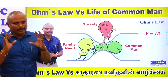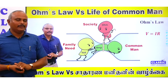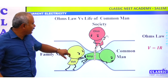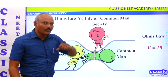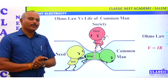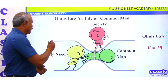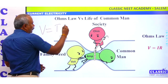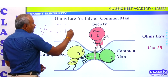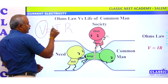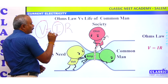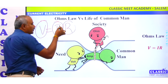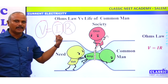That's how it matches a practical example. You can see Ohm's Law vs the life of a common man. Ohm's Law is V equals IR. The V is a potential difference — that's why it creates a current. A potential difference creates a current, but it also creates a resistance on the current flow.